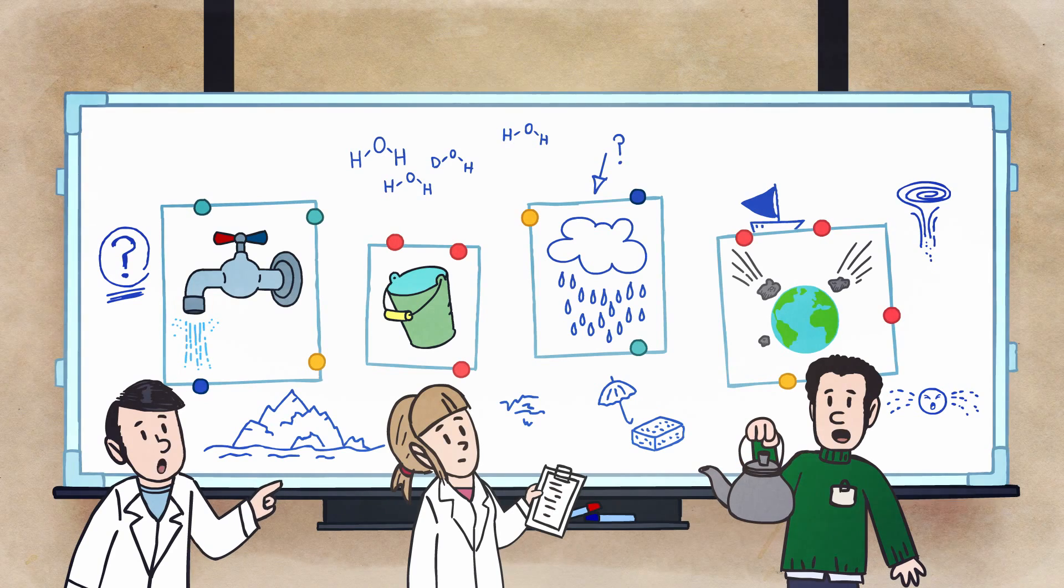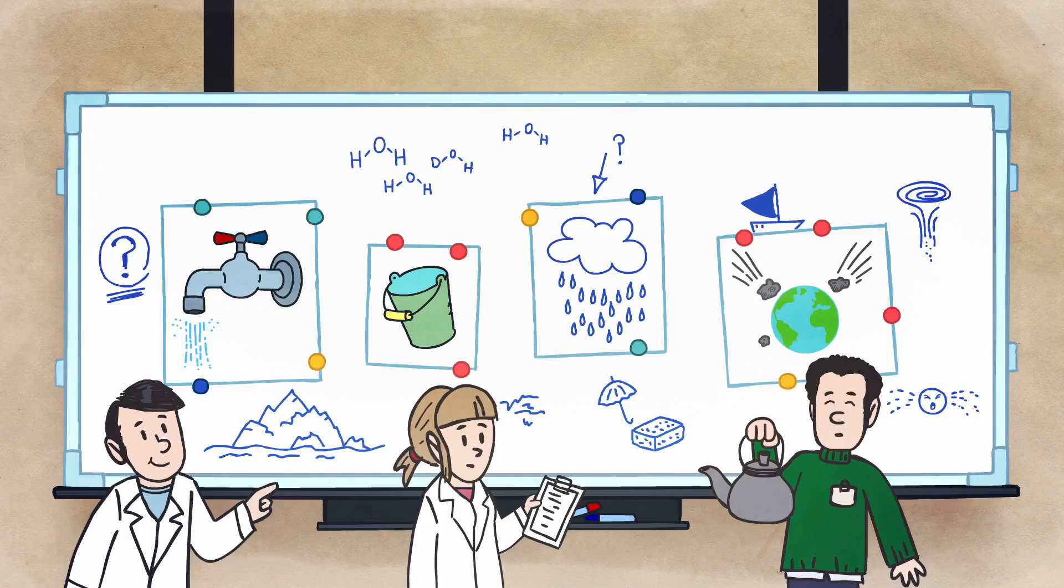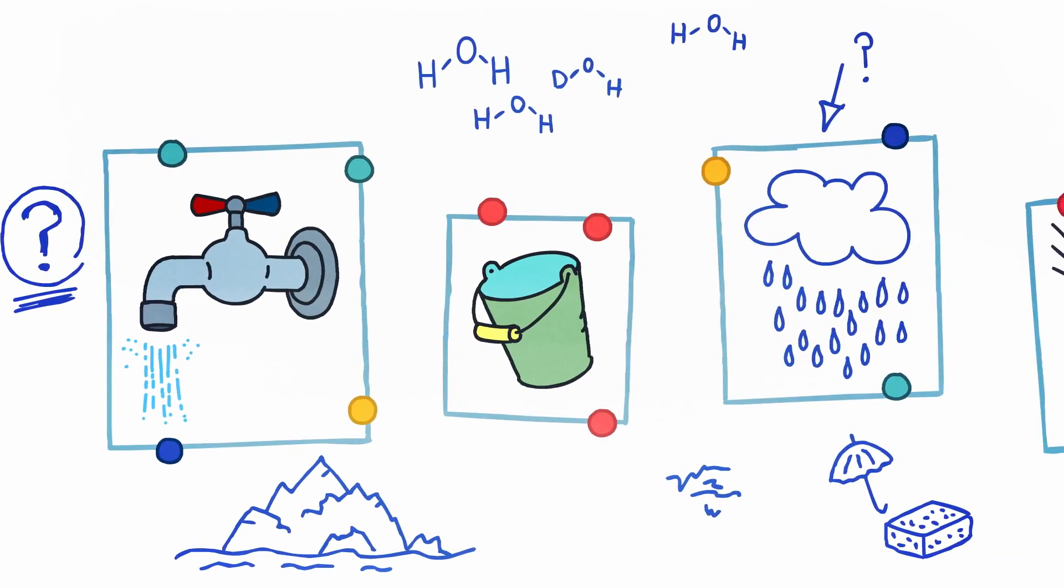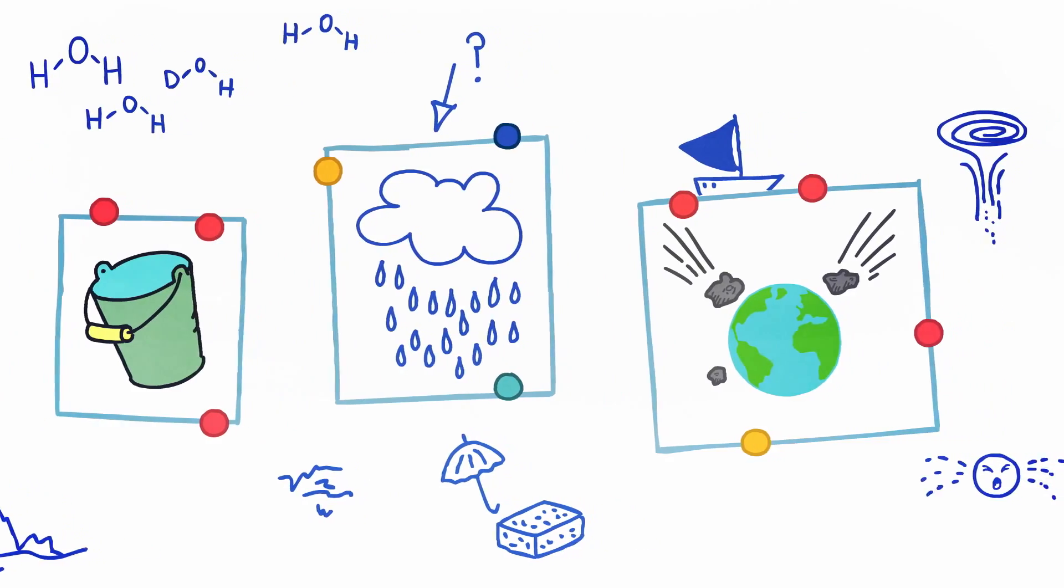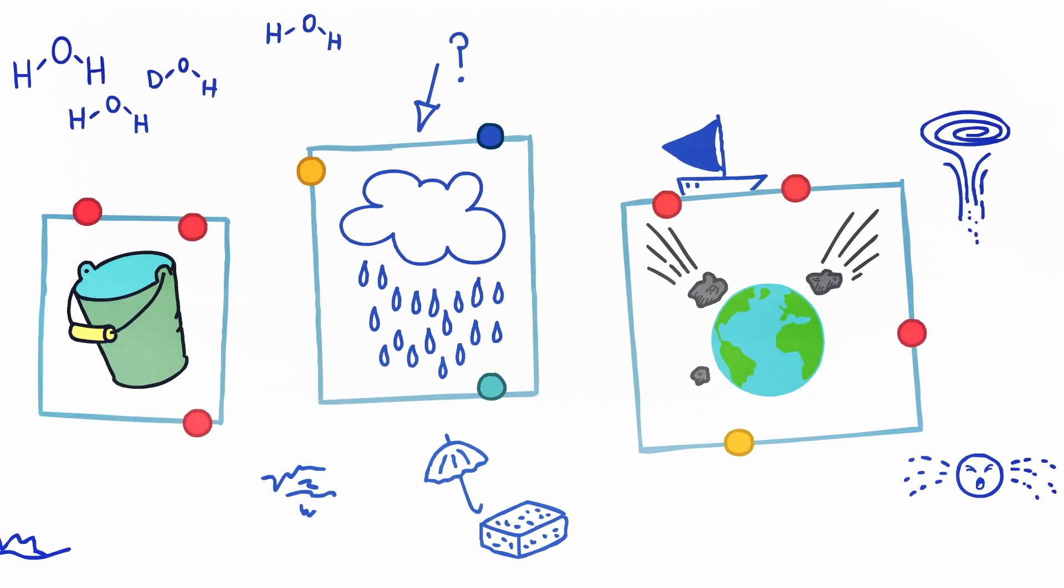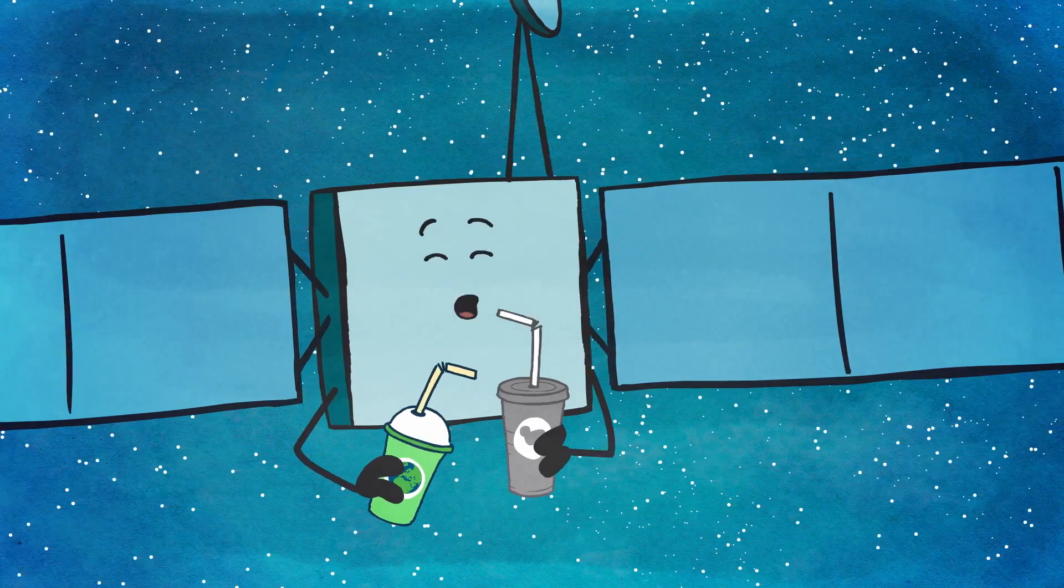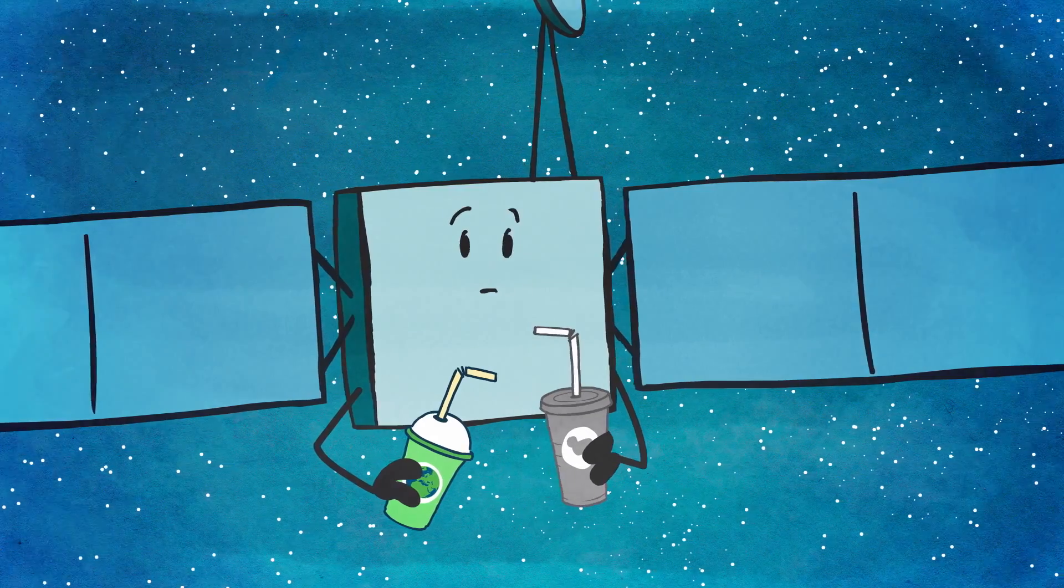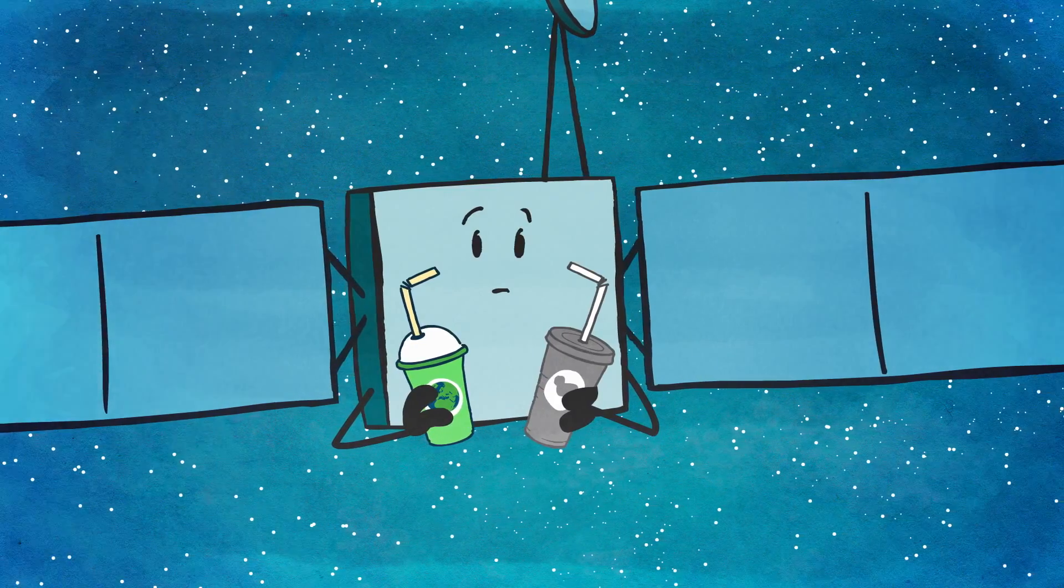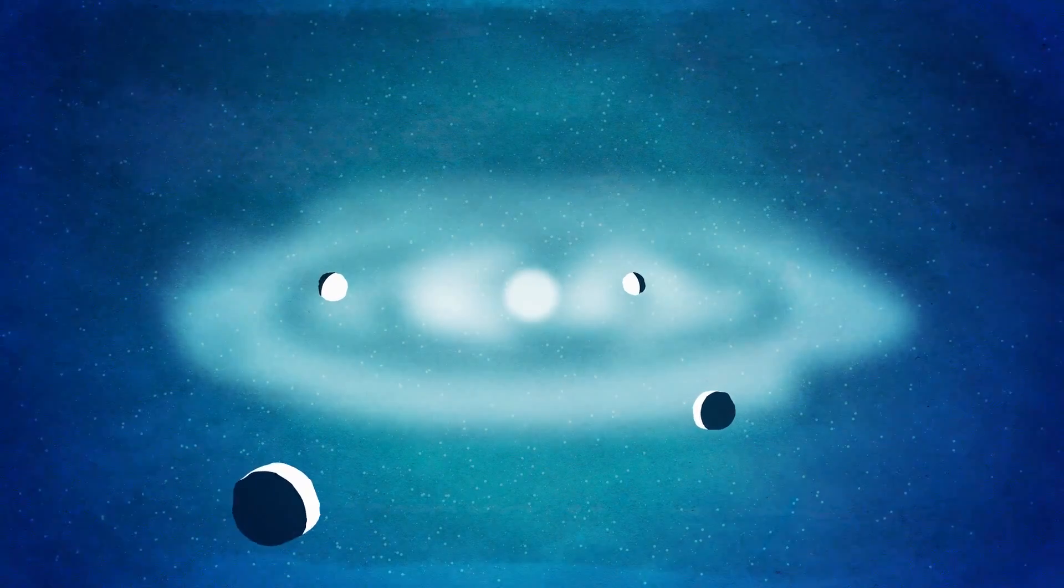One of the most important questions scientists back home wanted to answer was where Earth's water came from. Could it have come from comets and asteroids billions of years ago? Rosetta was surprised to discover that the water vapor flowing away from her comet had a different flavor to Earth's oceans. The scientists wondered what it would mean for their theories of how the solar system evolved.